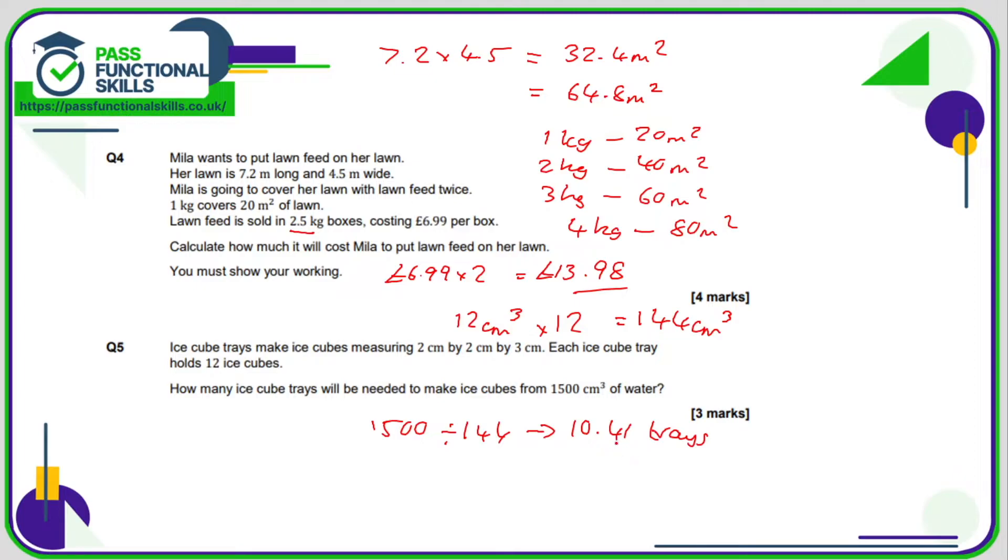How many ice cube trays will be needed to make ice cubes from 1500 cubic centimeters of water? We just need to divide 1500 by 144, and that is 10.41 trays. Now, 10.41 is nearer 10 than 11, but if we get 10 trays, that's not enough trays for 1500 cubic centimeters. So in this case, we're going to have to round it up, so the answer is therefore 11 trays.